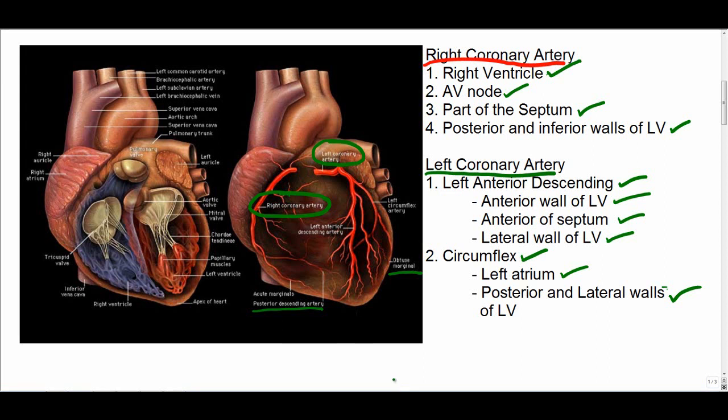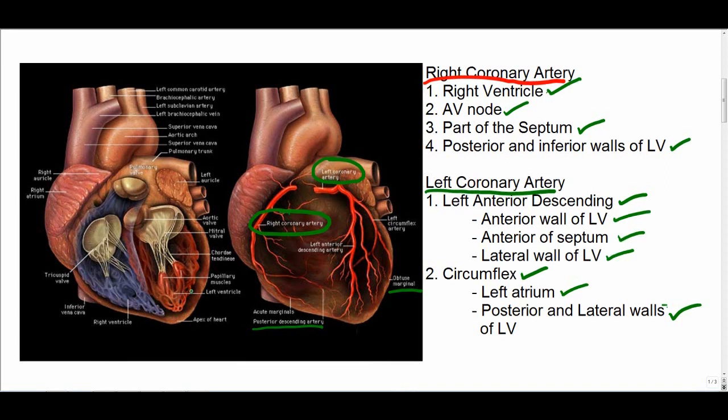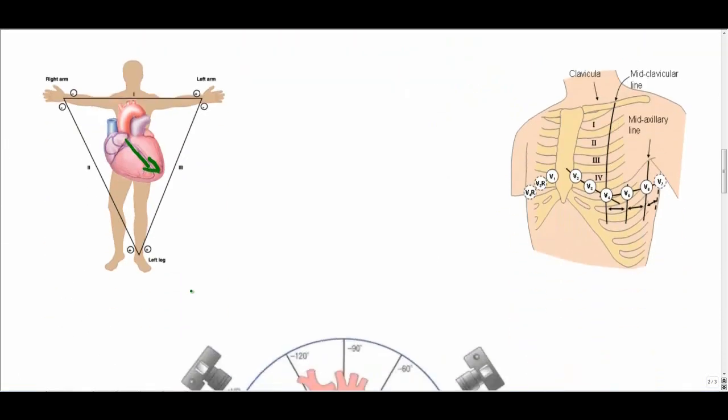We won't address MIs at this time. Next we will look at the different leads that help create an EKG by recording voltages and direction of that voltage in the heart.